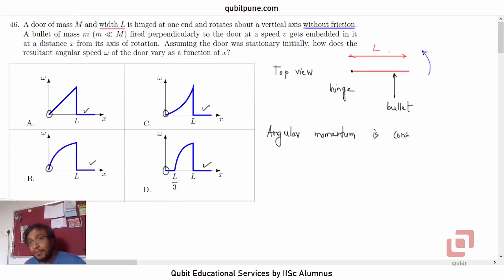Now, angular momentum of what? We are also required to specify that. Angular momentum is considered of a system. And what is our system? Our system is the door and the bullet. Because the bullet is fired perpendicularly, its motion will be along this line.